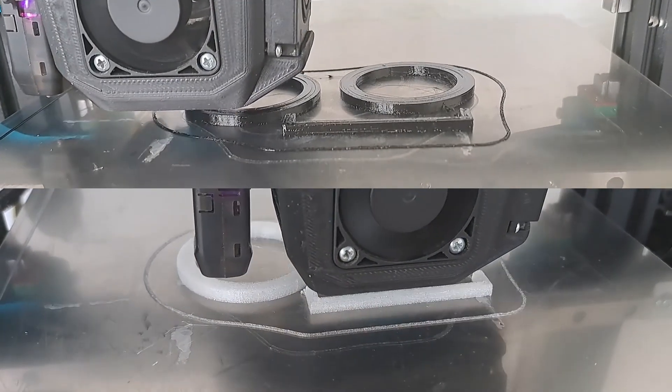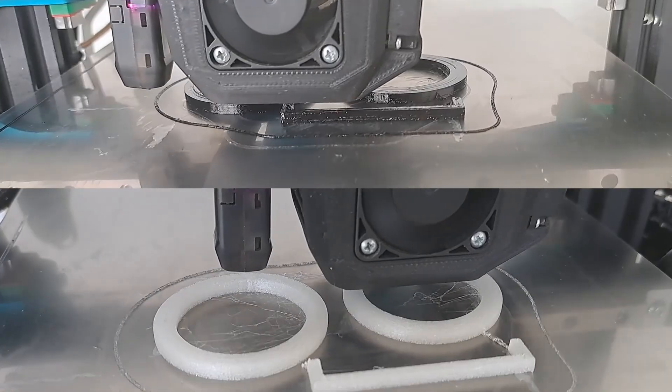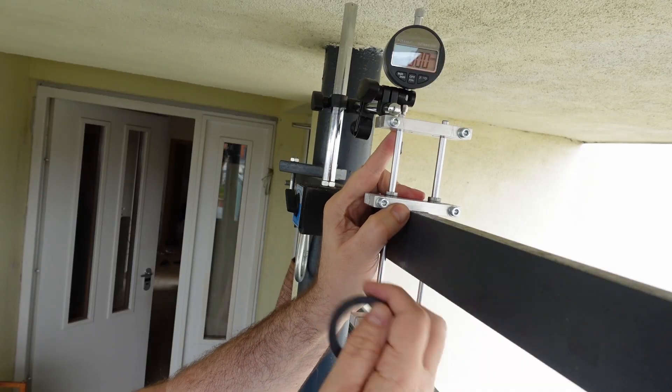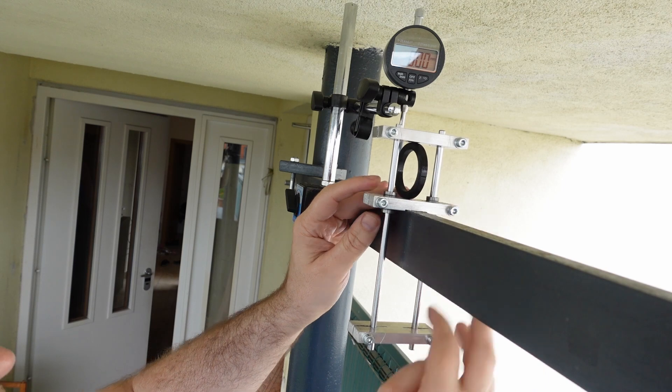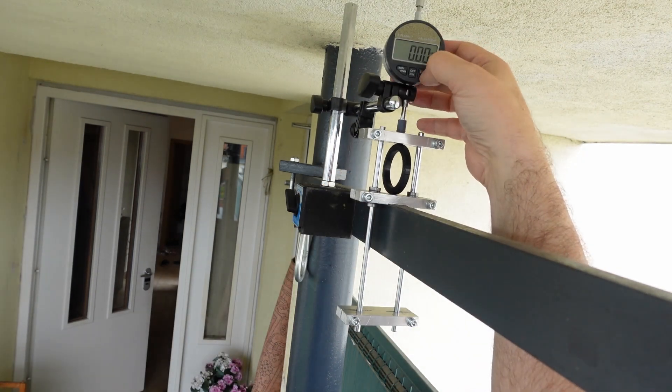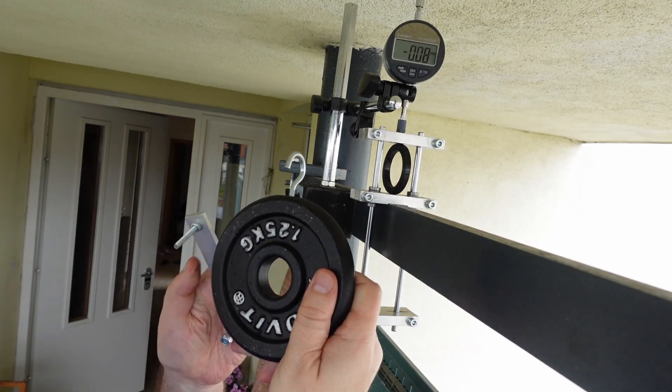I decided to do the full testing method with these TPU materials. These are those additional test specimens to complete my flexible material testing. This is the ring where I will be measuring the compression and the bending.